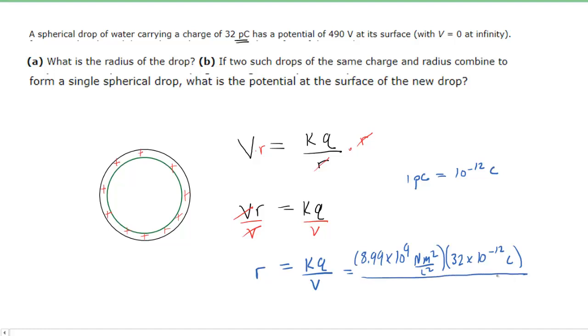And then we'll divide this by the electric potential, and that is given as 490 volts. So let's pick up our calculators and type this all in. When we do that, we can see that the radius of this spherical drop of water is roughly 5.87 times 10 to the negative 4, and that unit will be in meters, the standard unit of length. So that completes part A.